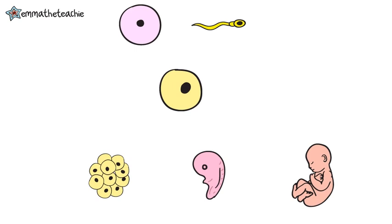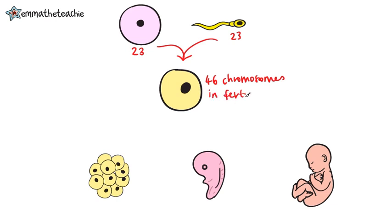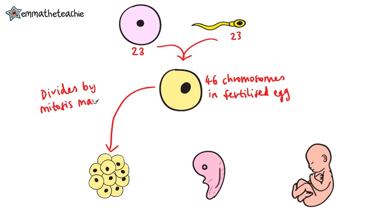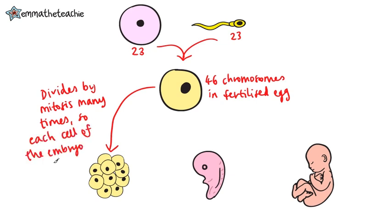Let's look at what happens when the gametes fertilize. The egg and the sperm each have 23 chromosomes, so when they fuse together you're going to get the full 46 chromosomes in the fertilized egg cell. The fertilized egg cell will then divide, this time using mitosis, many times to form the early embryo. Each cell of the early embryo will contain the 46 chromosomes.